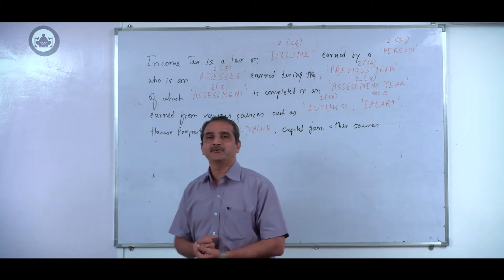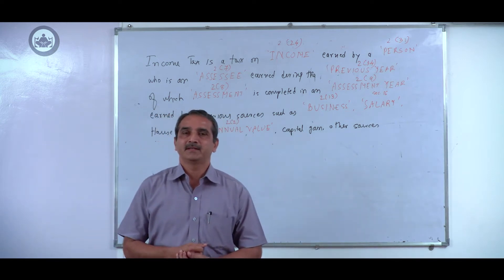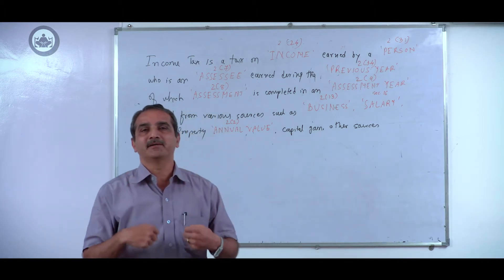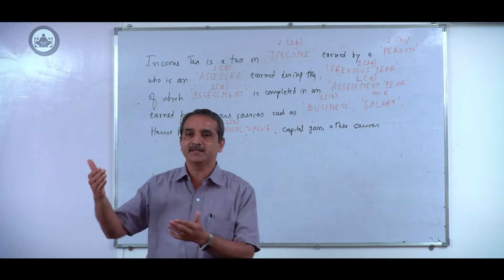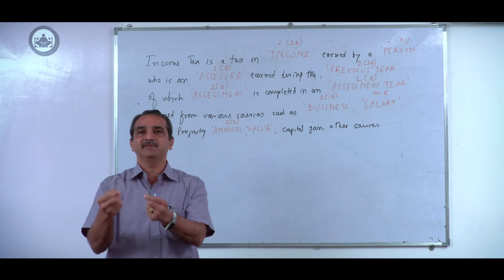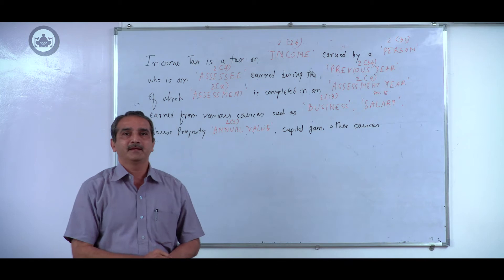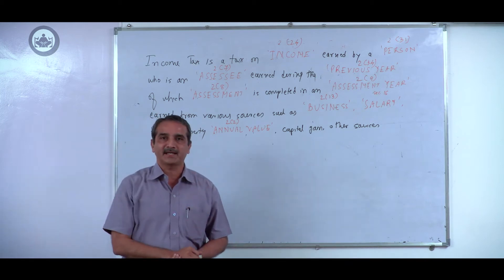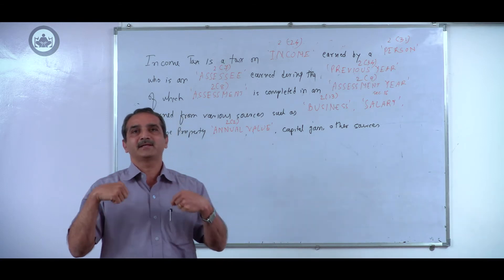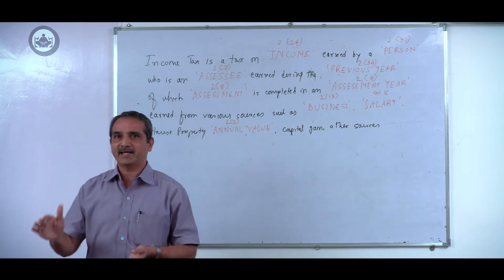Income tax is a direct tax. That is, the person who pays the tax bears the burden of that tax. Unlike indirect taxes, where the person paying the tax is merely an agent who collects the tax and pays that to the government. In the case of a direct tax, the person who pays the tax also bears the burden. Income tax is one of the finest examples of a direct tax.